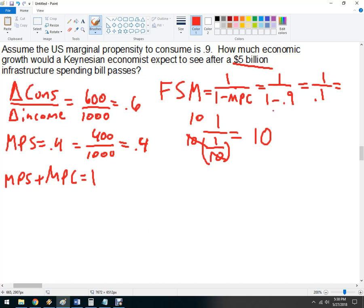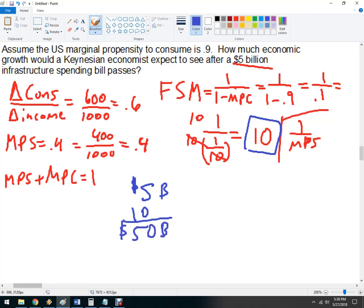1 minus the MPC is this rearranged. So, the other way to think about the fiscal spending multiplier, in case you're taking a test or you can't use notes or anything, is 1 over the MPS. And you'll get there exactly the same way. So, let's go back to the question here. So, I've got a fiscal spending multiplier of 10, and I want to know how much after $5 billion. So, we just multiply 5 billion times 10,